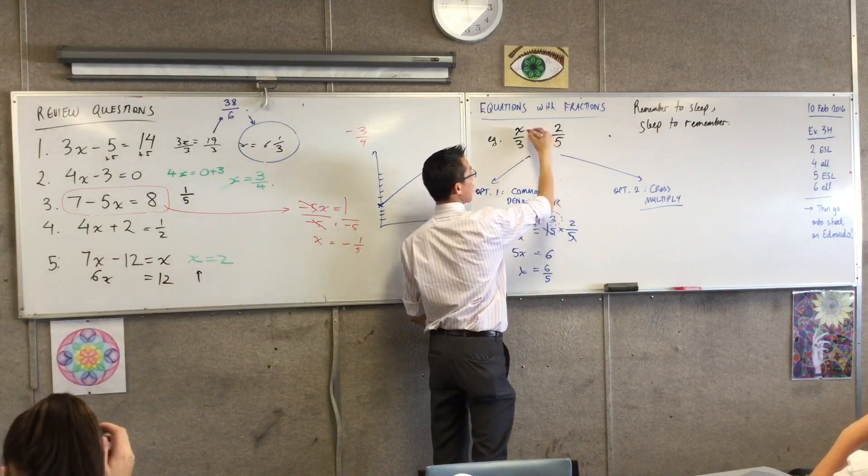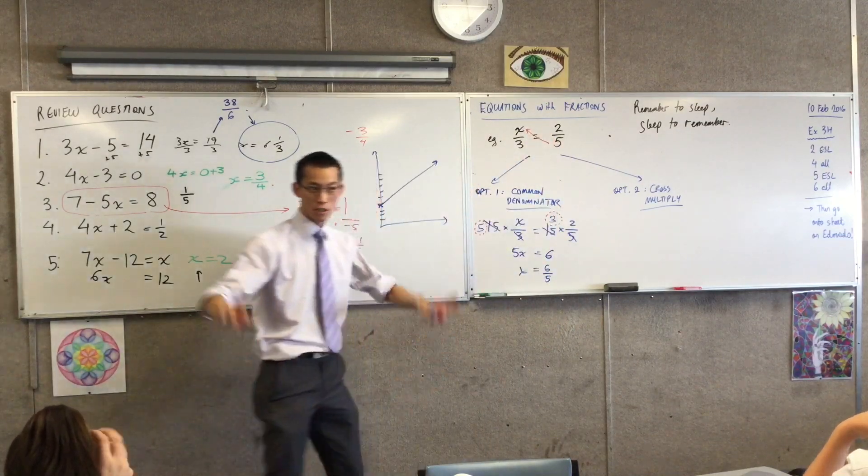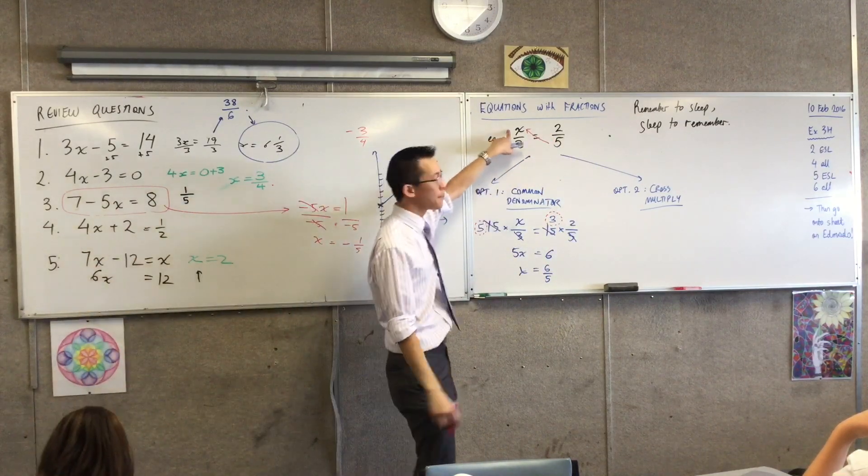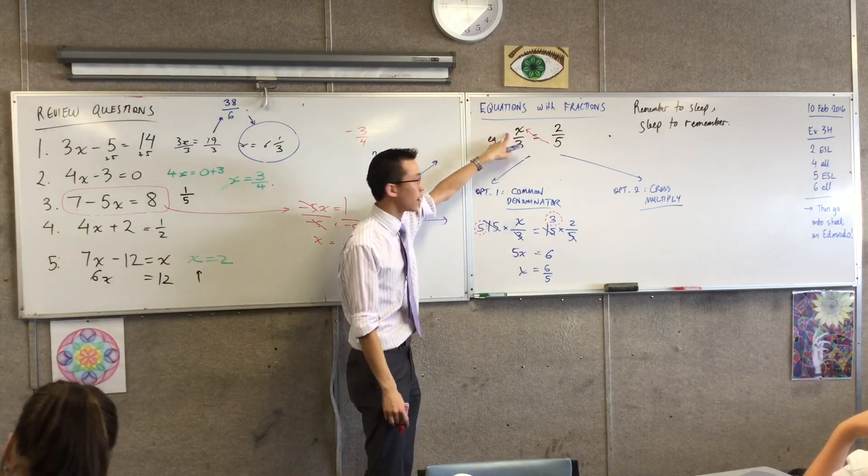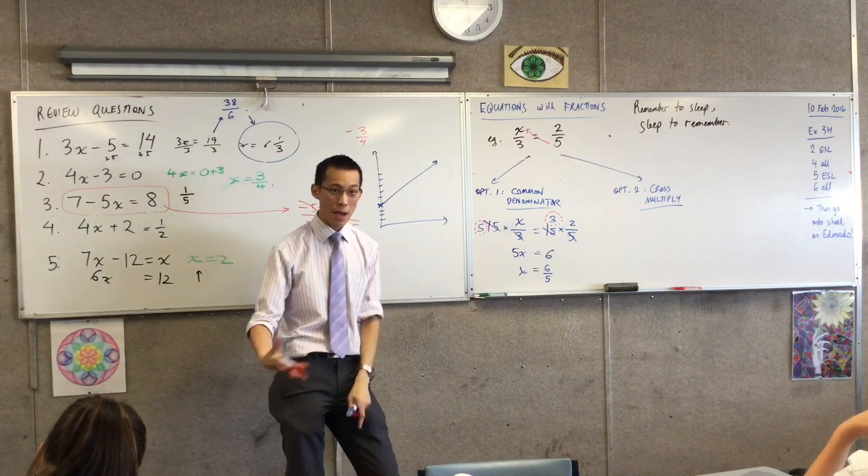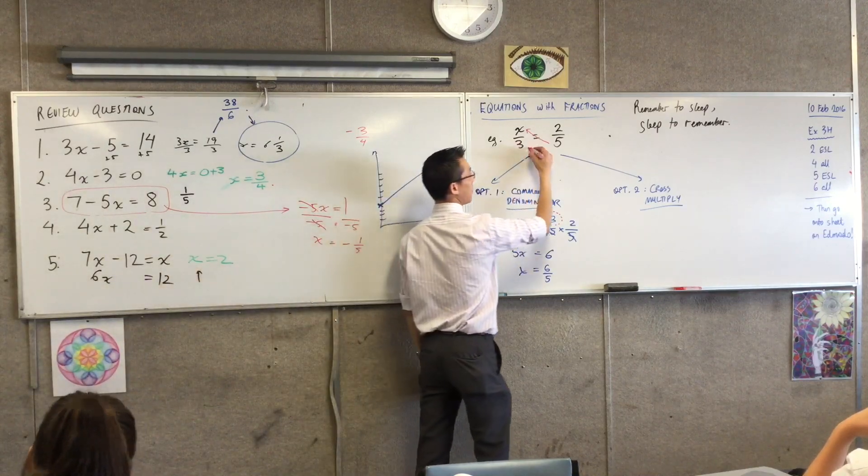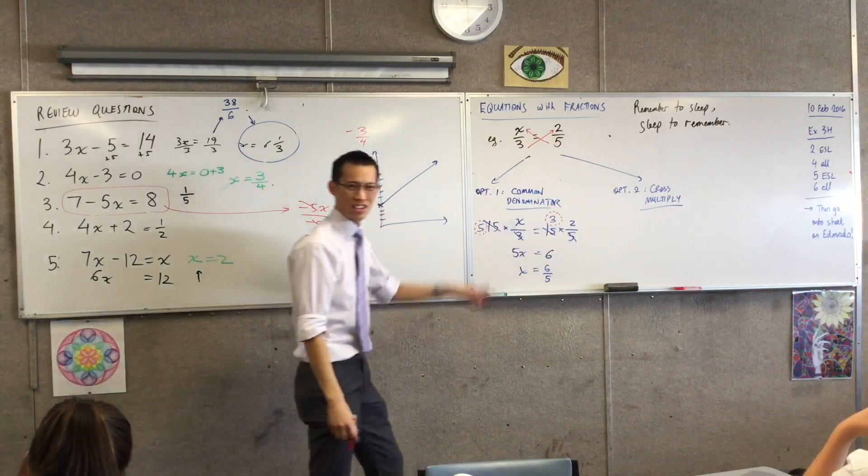This 5 is going to come up to the top here. Do you see that? Multiply both by 5 and it ends up on this numerator—disappears from here and appears up there. At the same time, if I multiply by this 3, it just migrates over there. Can you see why it's called cross multiplication? Not very imaginative, right?